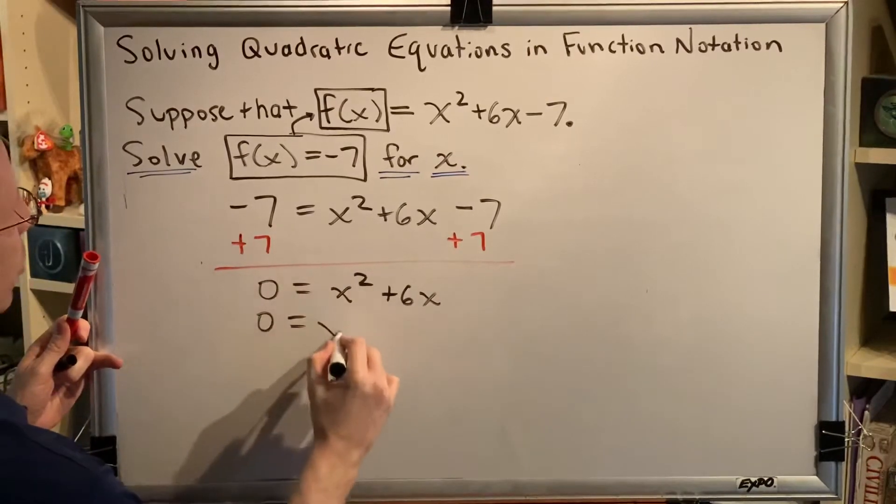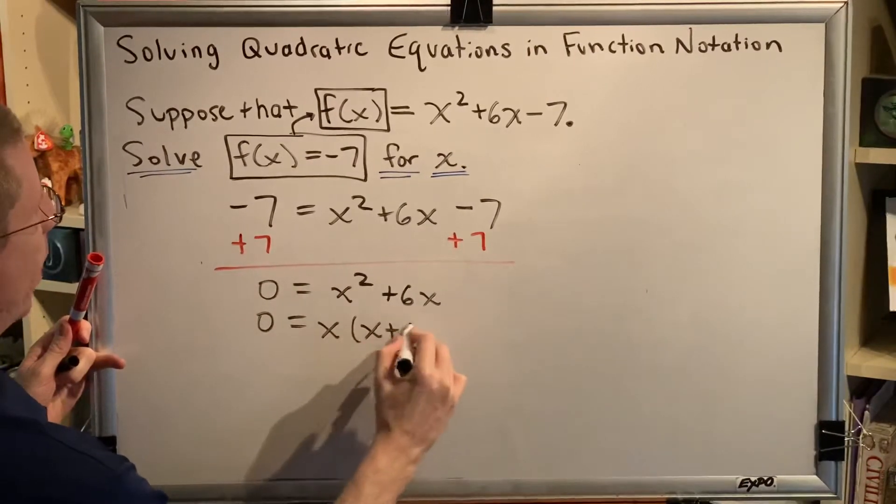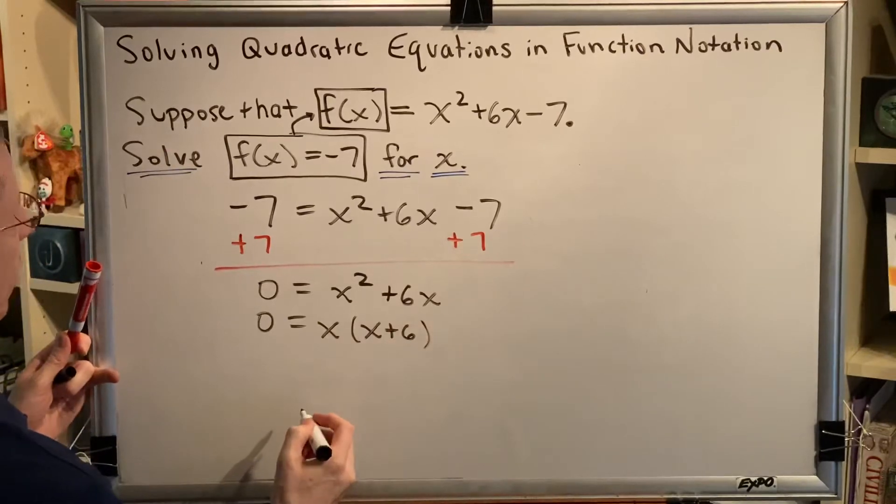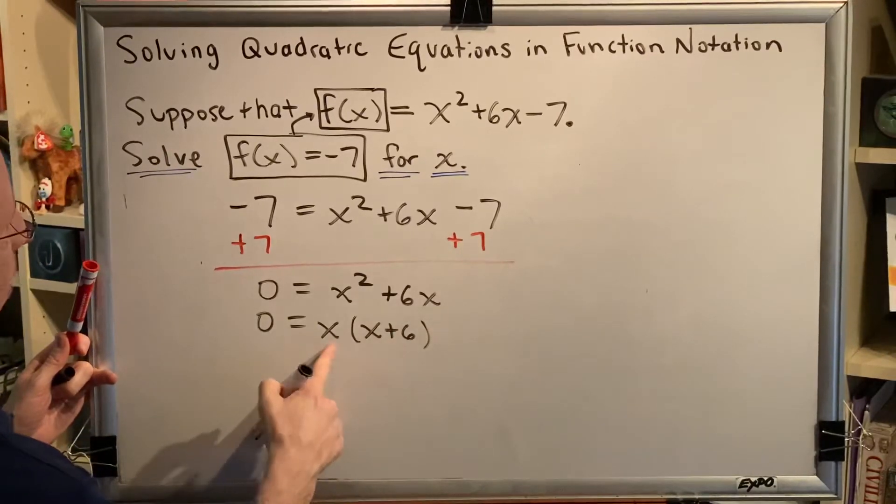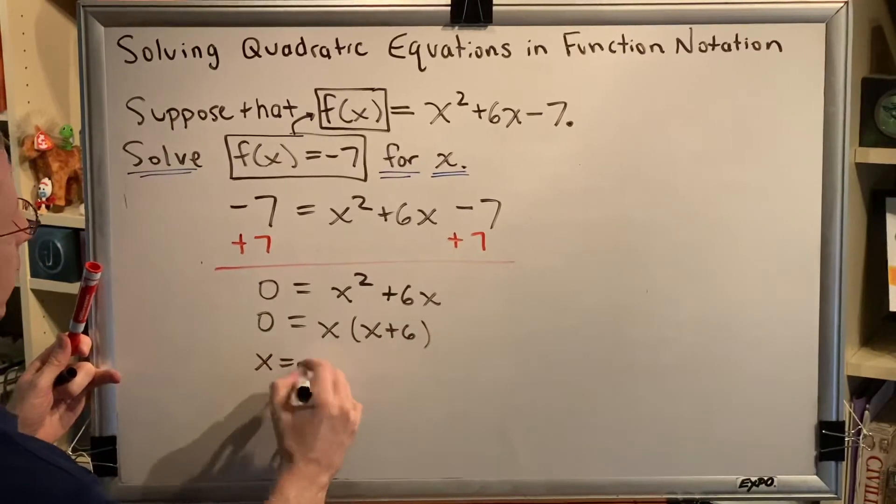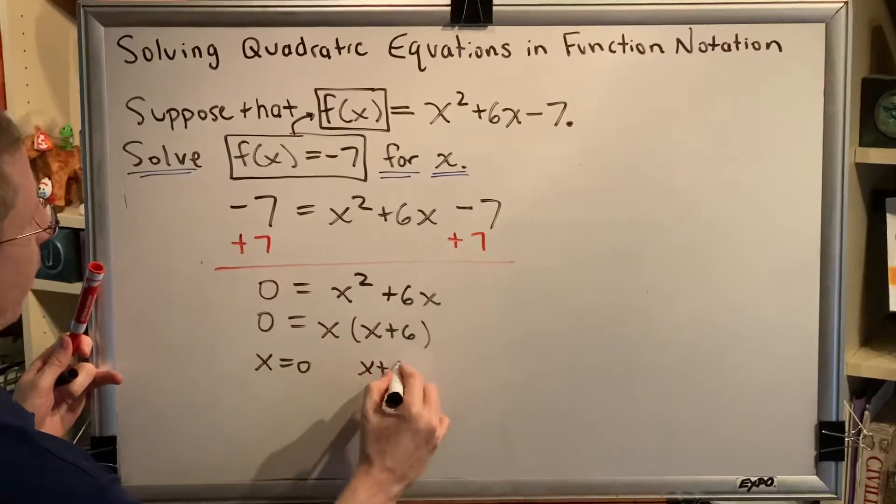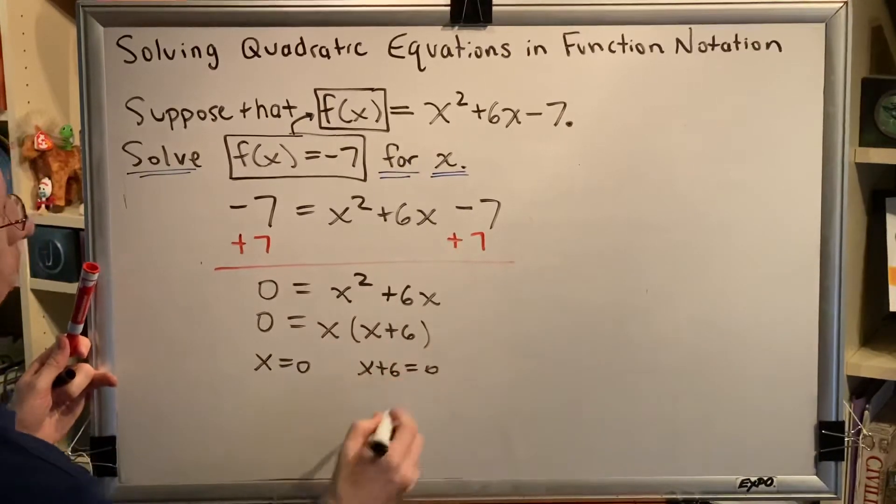We'll solve by factoring. The GCF is x and when we take it out, we have an x times an x plus 6. By the zero product property, either the first factor is 0 or the second factor is 0 or both.